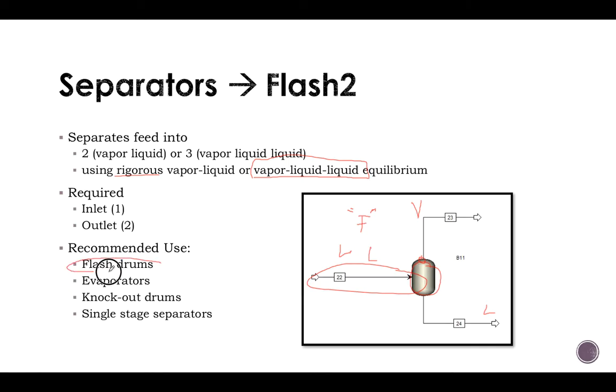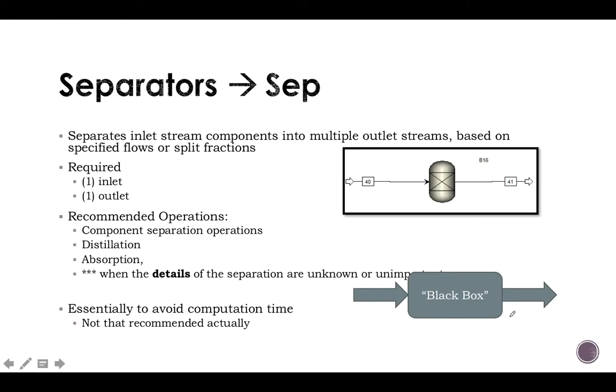It's very recommended, especially for flash drums or knockout drums, which are essentially single-stage separators. Flash3 is essentially the same thing but has an extra outlet. Typically you'll get a vapor outlet, liquid outlet, and water outlet.